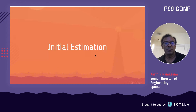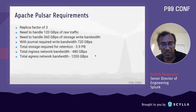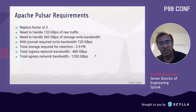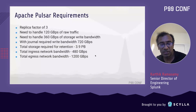For initial estimation: Apache Pulsar requires a replication factor of three, and needs to handle 120 GB/s of raw traffic, which becomes 360 GB/s of storage write traffic due to replication. With the journal enabled, that doubles to 720 GB/s. Total storage required for three-hour retention is approximately four petabytes. Total ingress network bandwidth required is 480 GB/s, and total egress bandwidth is 1,200 GB/s.